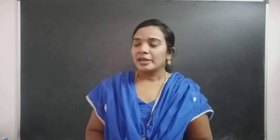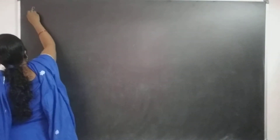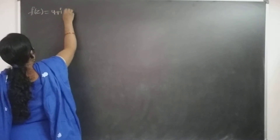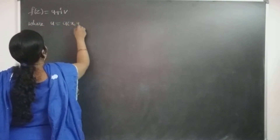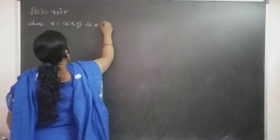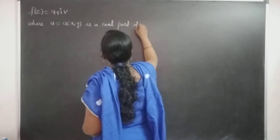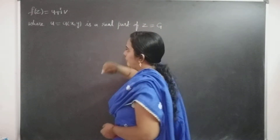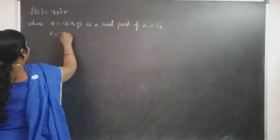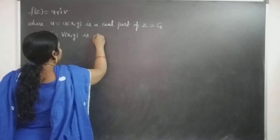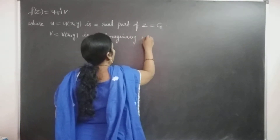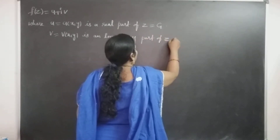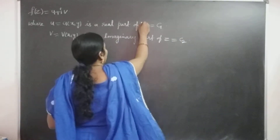In general, the function of the complex variable f(z) can be defined or expressed as f(z) equal to u plus iv. Where u equal to u(x, y) is the real part of f(z), let it be the c1 curve, and v equal to v(x, y) is the imaginary part of f(z), equal to c2. So the imaginary part and real part of f(z) form two families.